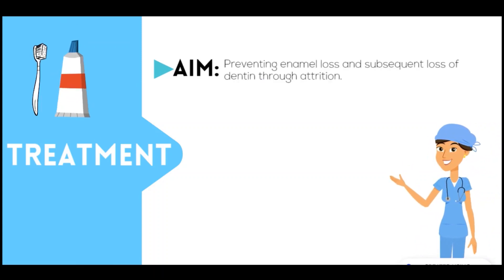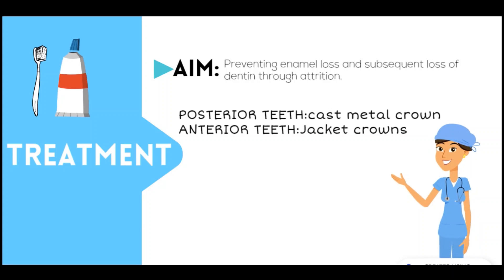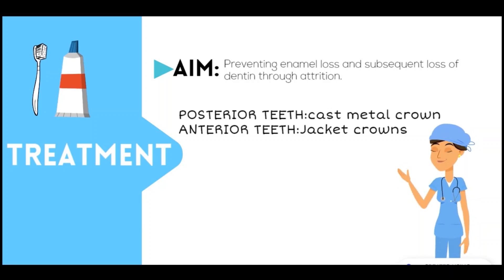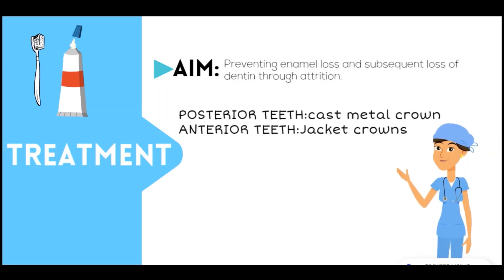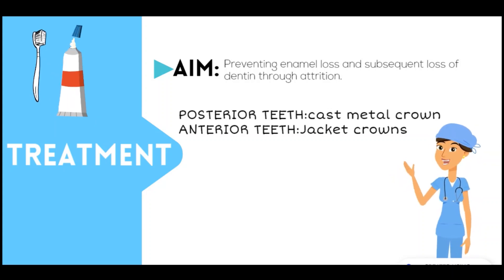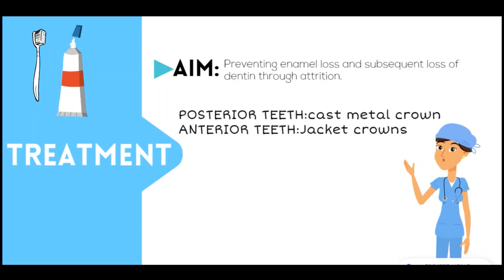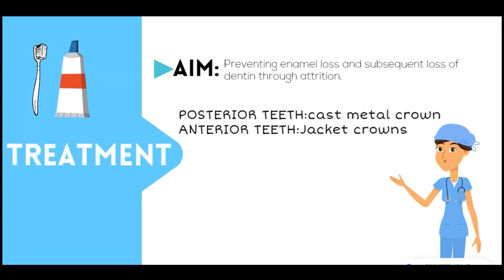Now let's look at how to treat dentinogenesis imperfecta. The main aim is to prevent enamel loss and subsequent loss of dentine through attrition. For repairing posterior teeth, cast metal crowns are used, and for anterior teeth, jacket crowns are used.